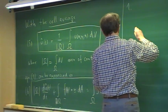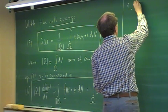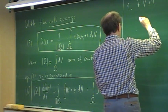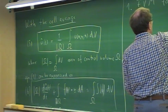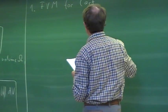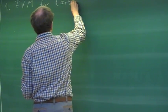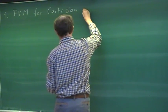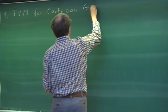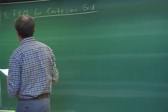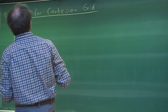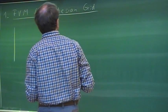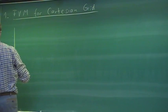We make a simplification here in the sense that we consider the finite volume method for the Cartesian grid. Later on we shall see the generalization to general grids, but we focus here at the beginning on Cartesian grids. That is the simplest case we can imagine, and a Cartesian grid is one that we have already seen in the lecture notes. We look at it now in more detail here.